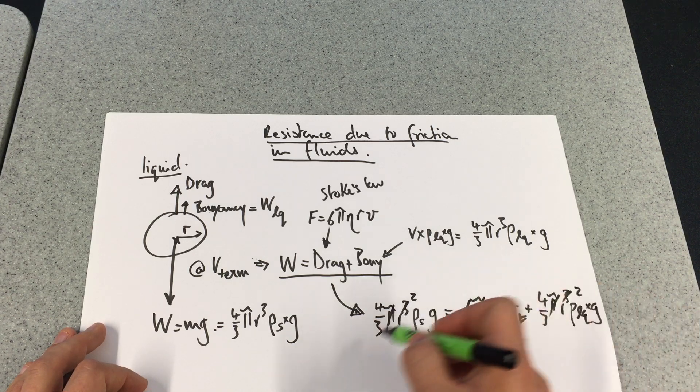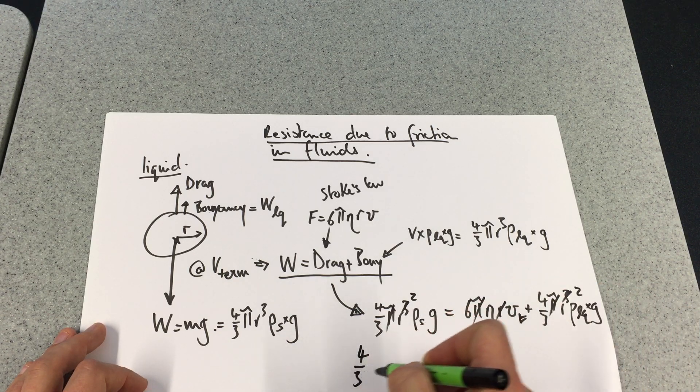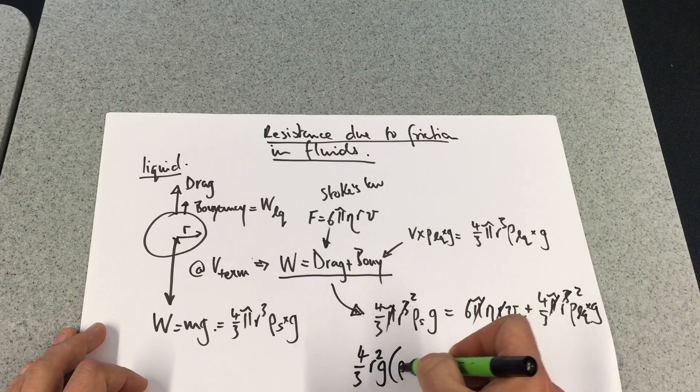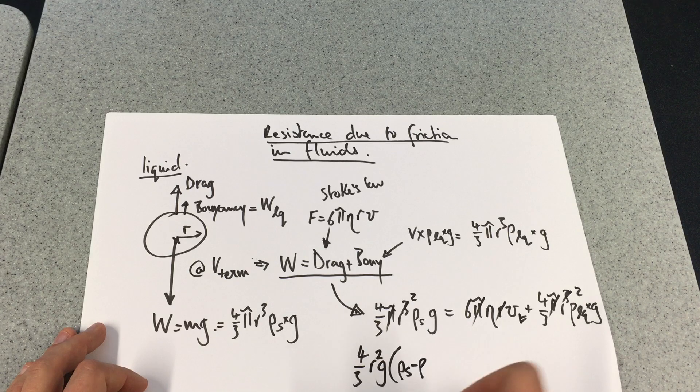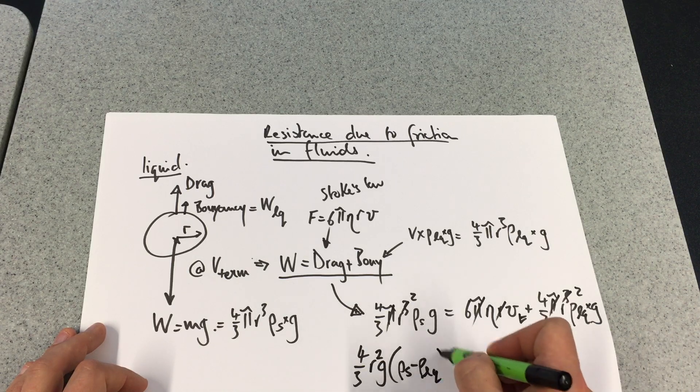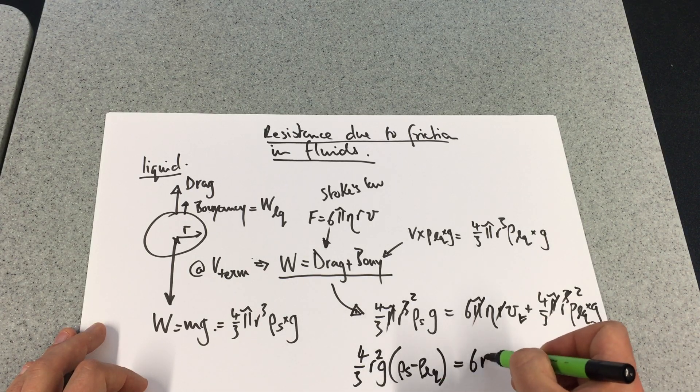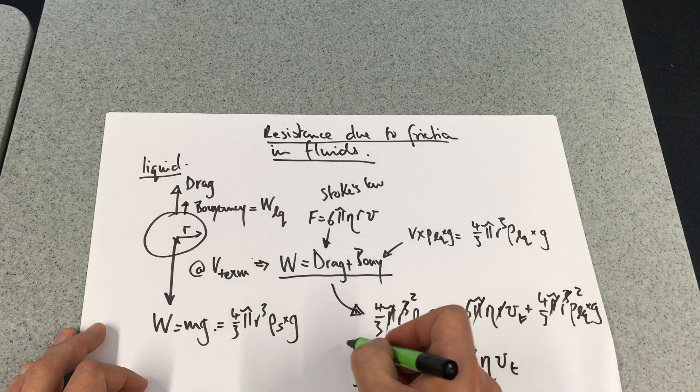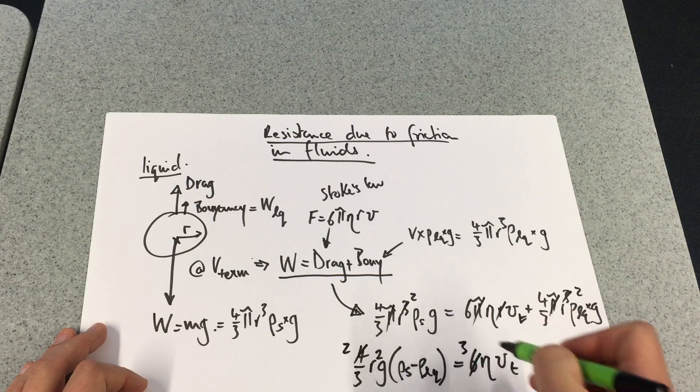Let's rearrange this. Take that over to that side, give me 4/3r²g of the density of the steel minus the density of the liquid equaling 6νv_terminal. I'll get rid of a half on both sides there.